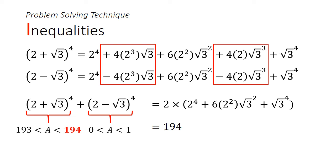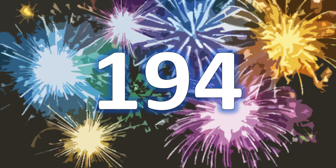That must mean that (2+√3) is somewhere between 193 and 194. So it should be a number slightly smaller than 194. Therefore, the smallest number larger than (2+√3) to the power of 4 is 194. So, did you get the answer?